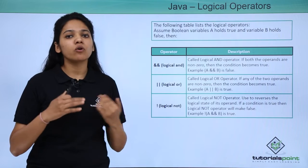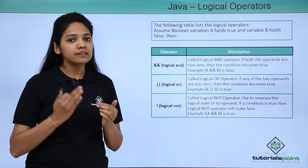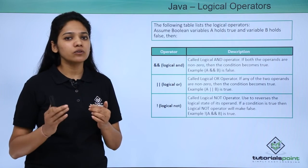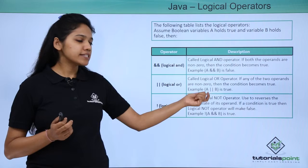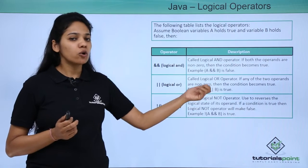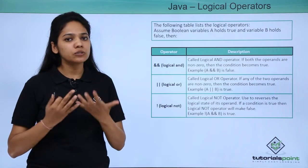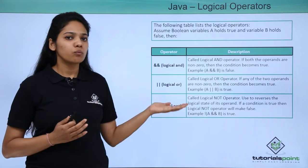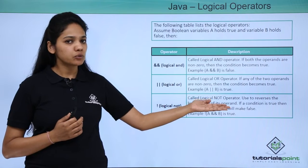The next one is logical OR. If any of the operands holds a non-zero value, then the resulting value will be true. That is, if either A or B — anyone holding a true value — the resulting value will be true.